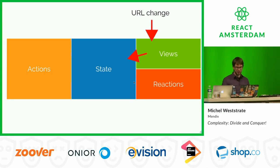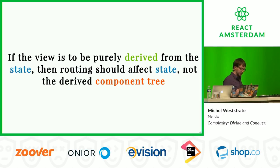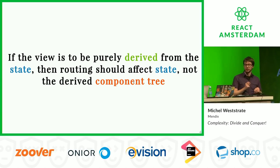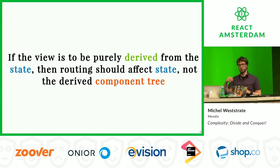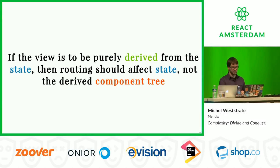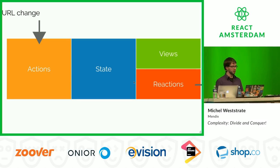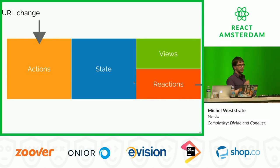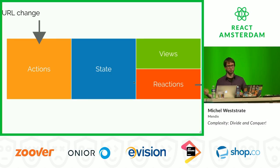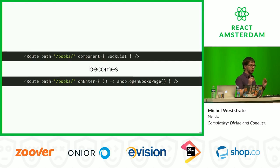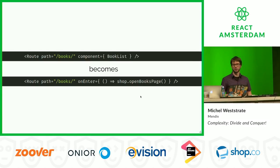What really is happening is: if the view is to be purely derived from state, then routing should affect our state and not our output - the view. Instead we want a model where the URL is just like an action: just like any user clicking a button, a URL pop is an action which changes state, and that leads to an updated view. Conceptually, instead of mounting a component, we just call store methods to transition our application to the correct page.